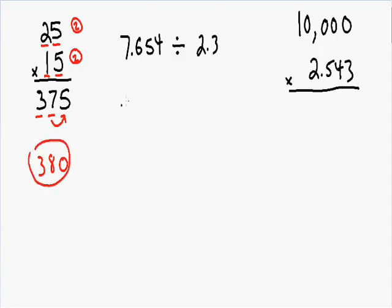Let's move on to our next example. Here we have 7.654 divided by 2.3. If we plug this into our calculator, our calculator is going to give us a really long answer of 3.327826 and it goes on even further. But we need to round, so how many significant figures do we round our final answer to?